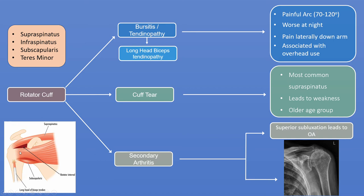The rotator cuff conditions are a group of four conditions — but really three. Bursitis or tendinopathy is the first: the tendons become tendinopathic or the lining becomes inflamed, usually from overhead work, and they may present with a painful arc between 70 to 120 degrees of motion. Pain is worse at night, felt laterally down the arm, and can be associated with overhead work. In younger people it's bursitis; as the tendon degenerates it's called tendinopathy; if the long head of biceps is involved, it's long head of biceps tendinopathy. As patients age they can develop tears — hastened by smoking. This more commonly occurs in the supraspinatus, leading to weakness, and if the tear is significant the humeral head starts subluxing out of the joint, leading to secondary arthritis — which is stage four of rotator cuff disease.